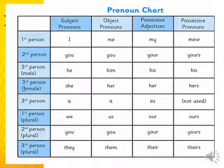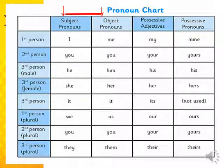This is the pronoun chart — we are going to see all the pronouns we have studied so far. The first column shows the subject pronouns, which appear at the beginning of the sentence before the verb. The second column shows the object pronouns, which appear after the verb. The third and fourth columns cover possessive adjectives and possessive pronouns for today's lesson.